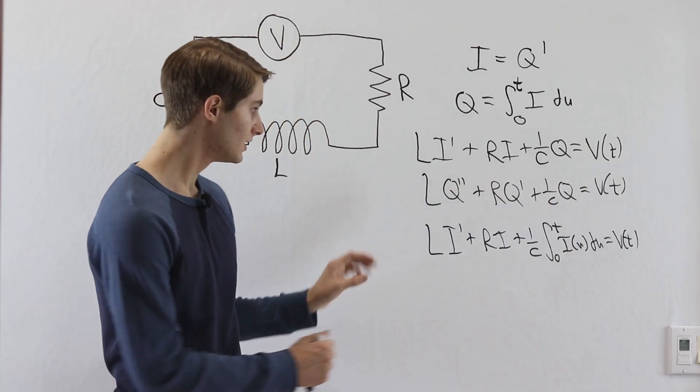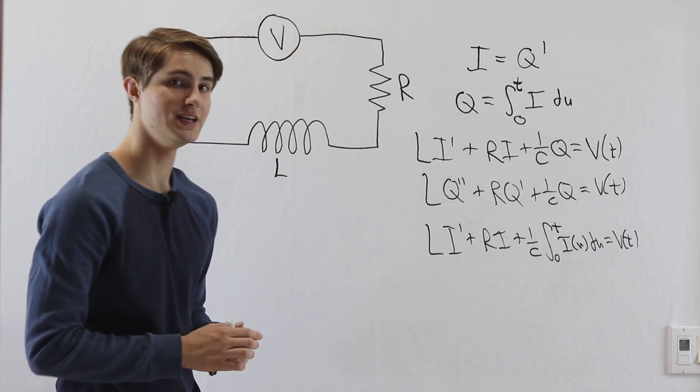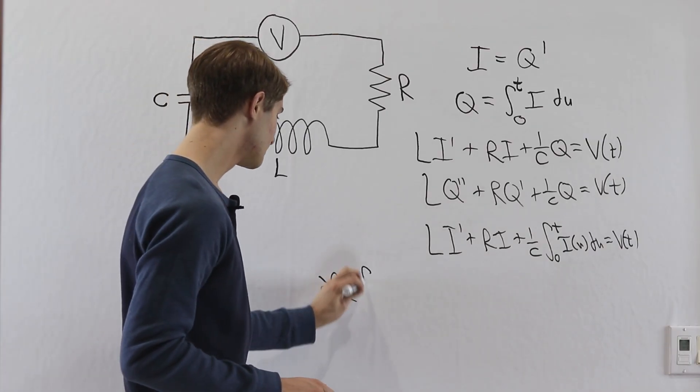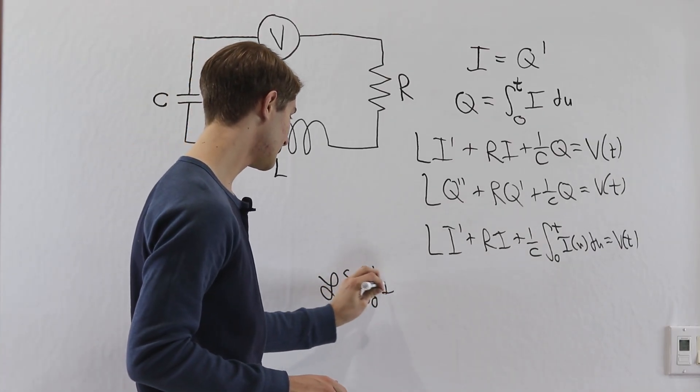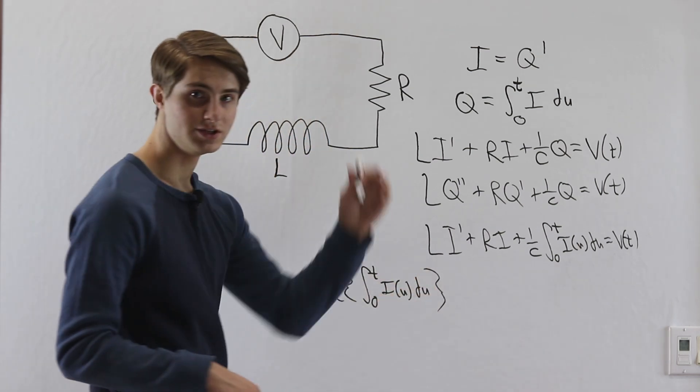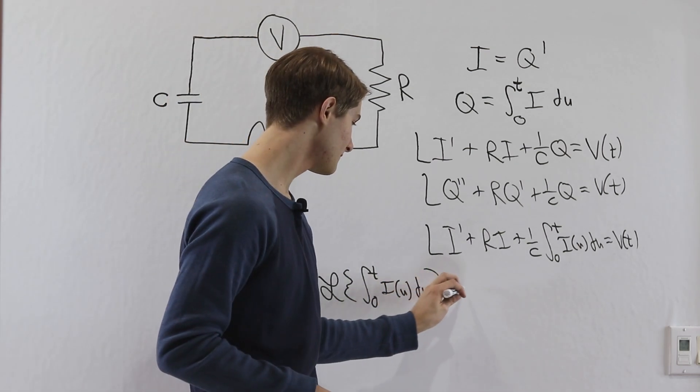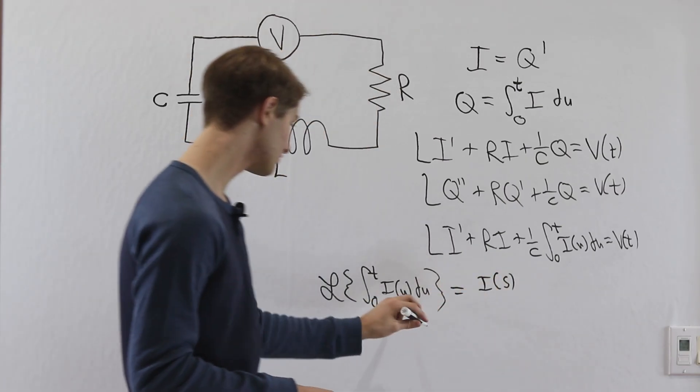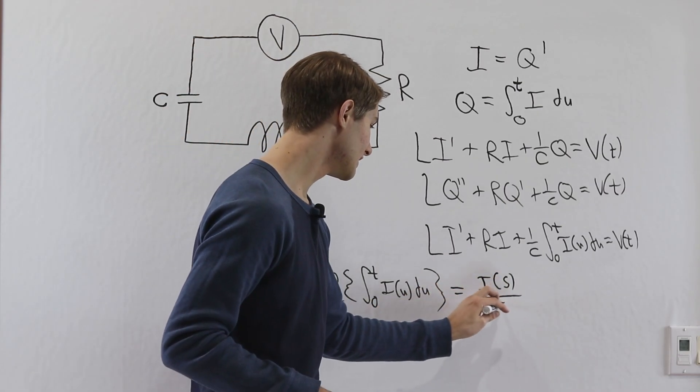And the reason that Laplace transforms are kind of cool in this case is that instead of looking at this second order equation, we can look at the equation in terms of an integral. Because remember that the Laplace transform of the integral from 0 to T of I of u du is one of the identities. You can see the description for the derivation. This is going to equal i of s, the Laplace transform of i, divided by s.